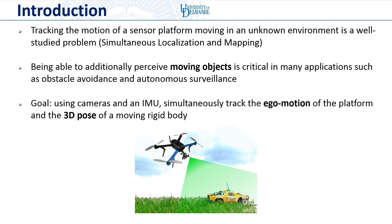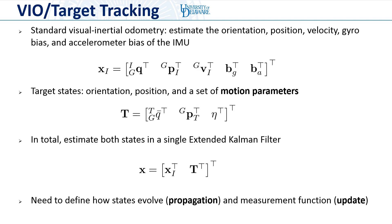The problem of estimating the motion of a sensor platform as it moves through some unknown environment is well studied. However, in many scenarios, we're not just interested in our own motion, but also that of other moving objects in the scene. As such, in this work, we seek to simultaneously track the ego motion of a platform as well as the 3D pose of a moving rigid body target using only low-cost and lightweight cameras and an inertial measurement unit.